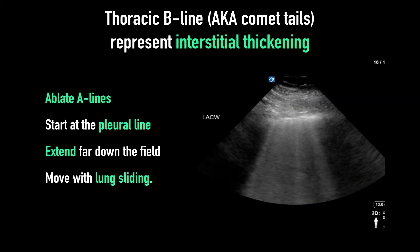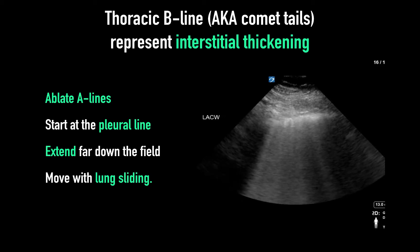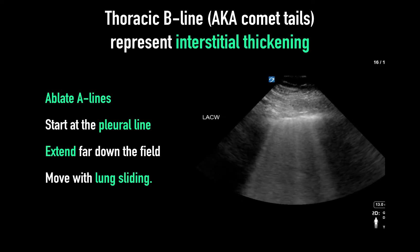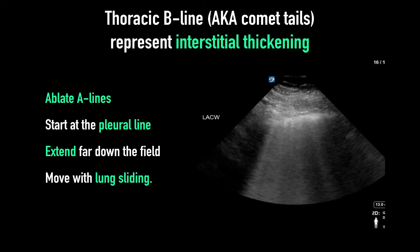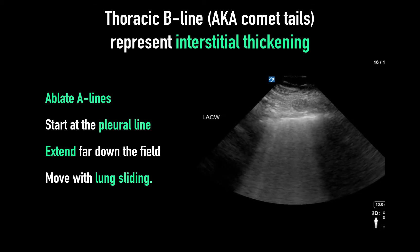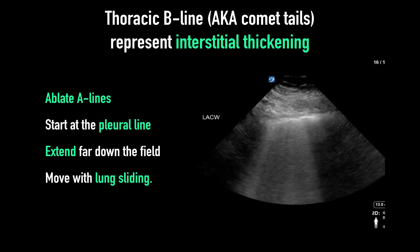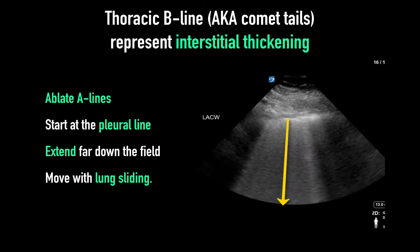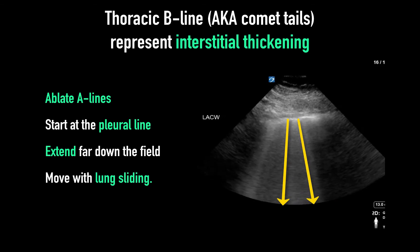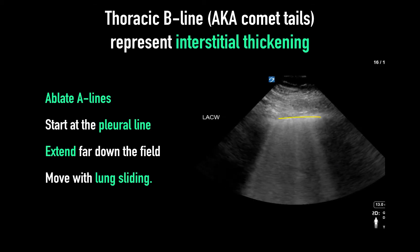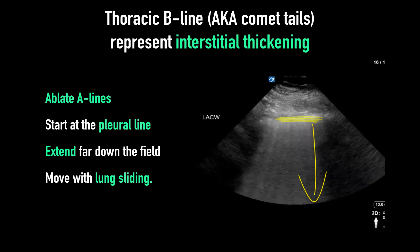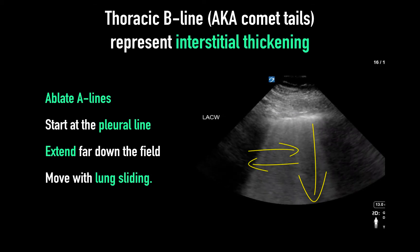The power of lung ultrasound to discriminate normal and abnormal lung tissue stems from this fact: as the septa widen from either hydrostatic or inflammatory fluid infiltration, these septa then fall within the resolution of ultrasound, allowing propagation of the ultrasound waves. The presence of air coexisting with the septa leads to the typical B-line artifact. The characteristics of B-line artifacts are that they ablate A-lines where they cross them, they start at the pleural line in the near field, move all the way down to the far field, and they move with lung sliding.